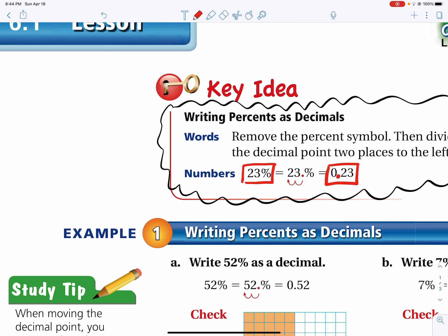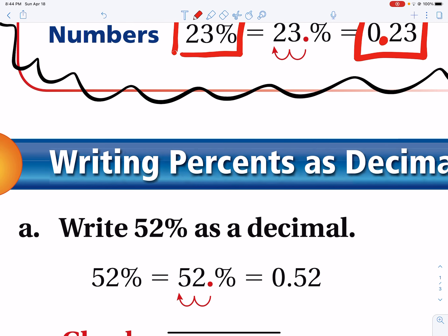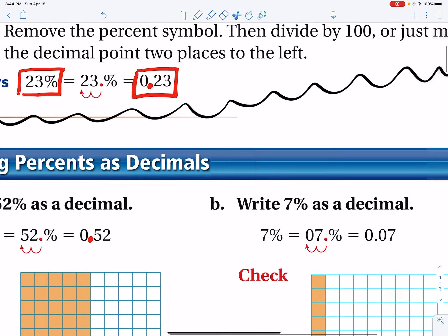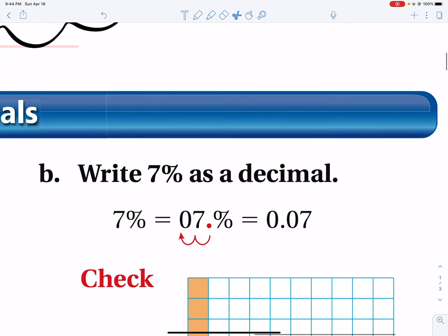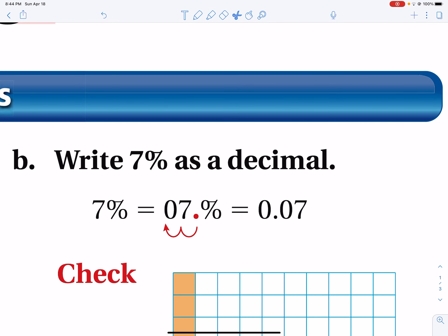Now, here's some examples. Write 52 percent as a decimal. Again, 52 percent. There is a hidden decimal here. Move the decimal to the left two places. And it ends up here. And there you have it. There's also 7 percent. And this one's great. I want to show this one by hand because I think it's pretty important to see what's going on.